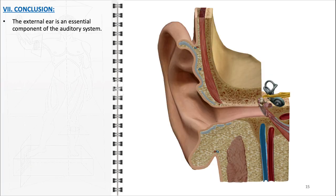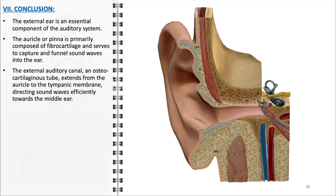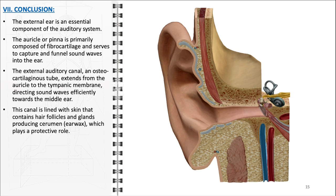In conclusion, the external ear stands as a vital component of the auditory system, intricately designed and serving multiple essential functions. The auricle, or pinna, is primarily composed of fibrocartilage, providing both structure and flexibility, and its primary role is to capture and funnel sound waves into the ear. The external auditory canal, an osteocartilaginous tube extending from the auricle to the tympanic membrane, serves as a passageway that efficiently directs sound waves to the middle ear. It is lined with skin containing hair follicles and specialised ceruminous glands producing cerumen, which traps dust, prevents particles from reaching sensitive inner parts of the ear, and possesses antibacterial properties to maintain canal health.